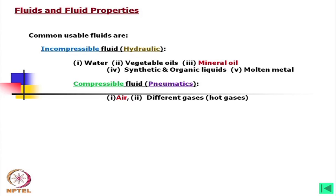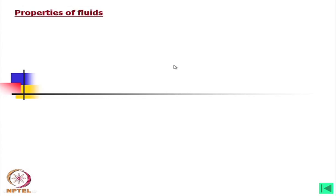Although we will come to compressible fluids later, the compressible fluids used in pneumatics include: one, air — in most cases only air is used. However, different gases, particularly hot gases, can also be used. We are now coming to the properties of fluids, which are mostly liquid unless otherwise mentioned.